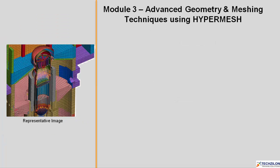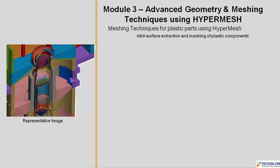Under Module 3 you will learn about advanced geometry and meshing techniques using HyperMesh, specifically meshing techniques for plastic parts. This includes mid-surface extraction and meshing of plastic components, and mid-surface extraction and meshing of BIW sheet metal components like chassis.